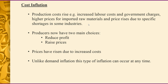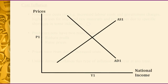Unlike demand inflation, cost inflation can occur any time. Demand inflation occurs because aggregate demand goes up — usually because people have a lot more money, so they're out there spending. Whereas cost inflation could be caused by almost anything: the Reserve Bank raising interest rates, or raw materials going up overseas.